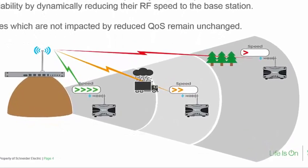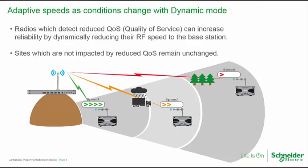Conditions have changed at two of the sites. A truck has driven in front of one site's antenna, and bad weather is affecting another. Each radio will detect that its path quality is degraded and adjust its data rate to maintain a high quality of service. Later, when these abnormal conditions have cleared, these sites will increase their speed again. Even though that faster speed may not provide a 20 dB fade margin, the system is still reliable because each radio reacts to keep quality of service high when conditions change.